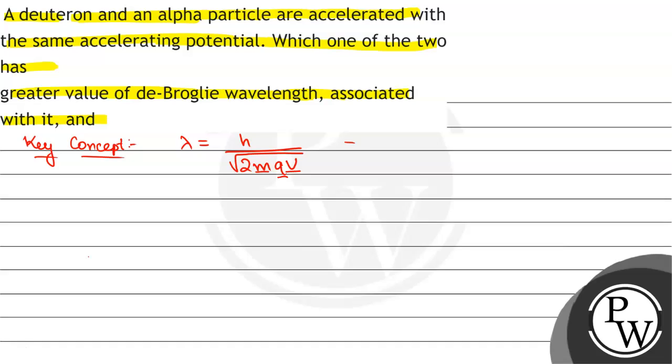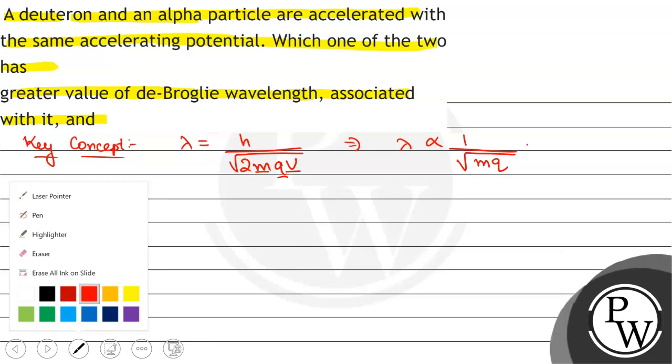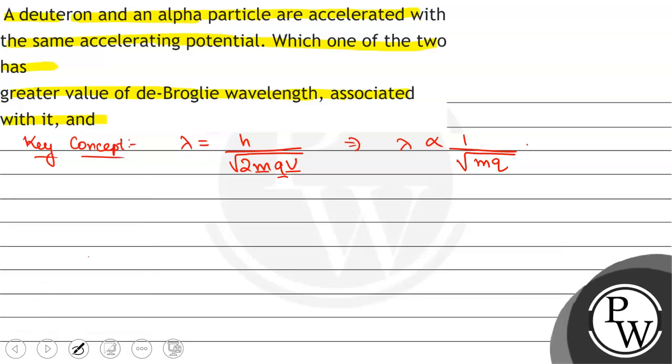So, here we will see that lambda is inversely proportional to root under mq. So, mass into charge product root under is inversely proportional to lambda.